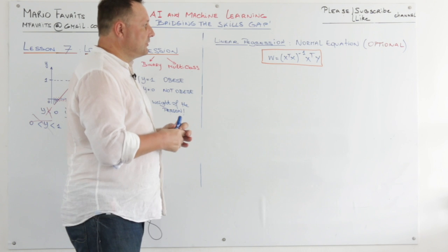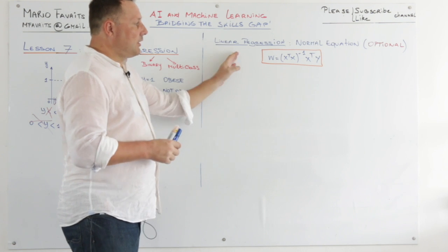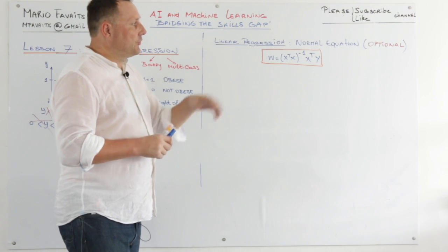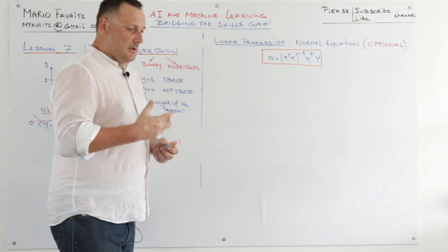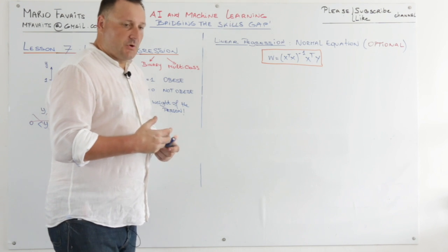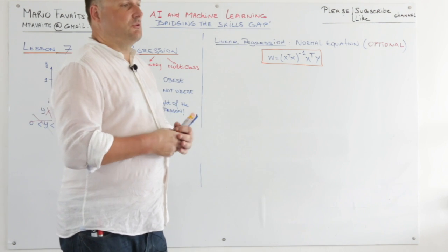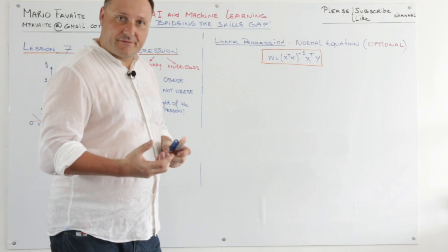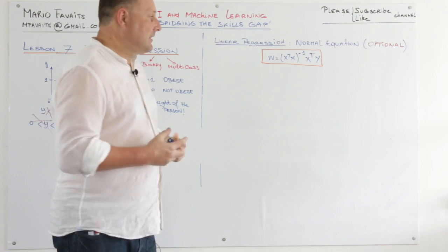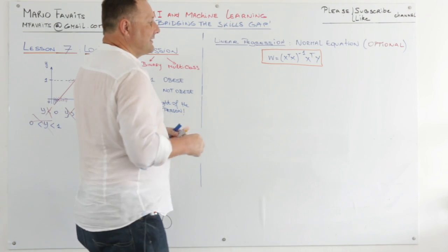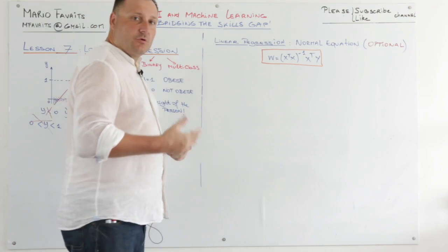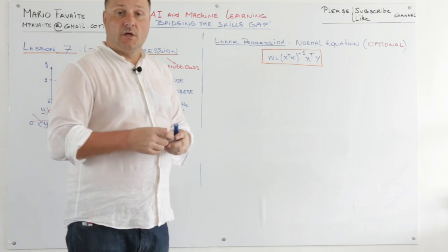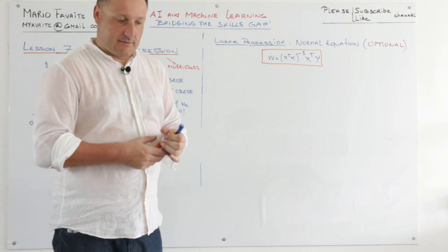Welcome to this optional session on the normal equation. Remember we've seen gradient descent — we define a cost function and then minimize it by doing gradient descent. But there is a direct way, a closed form, of finding the W's by solving the equation.